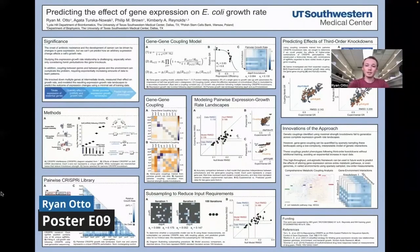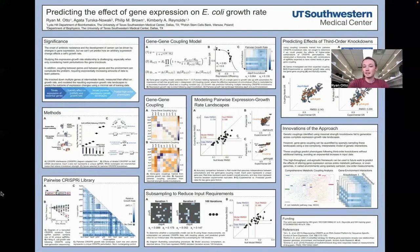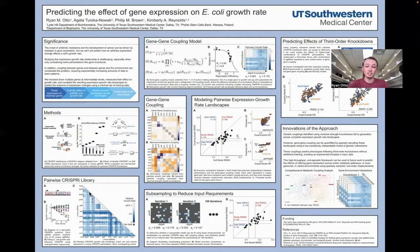My name is Ryan Otto and I'm a graduate student in the Kimberly Reynolds lab at UT Southwestern Medical Center. In our lab, we study the relationship between gene expression and cell growth rate, specifically in E. coli. Expression growth rate relationships are key in infections and cancer, and we lack tools that enable us to reliably predict the effect of an expression change. To get at this, we collected over 10,000 growth rate measurements following CRISPR-i knockdown of individual and pairs of metabolic genes, then modeled expression growth rate relationships of these genes and gene pairs.